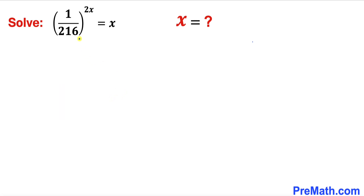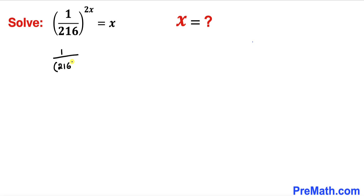Let's go ahead and get started and focus on the left-hand side of this given equation. The left-hand side can be written as (1/216)^(2x). This 1^(2x) is the same as 1, so we have 1/216^(2x) equals x on the right-hand side.